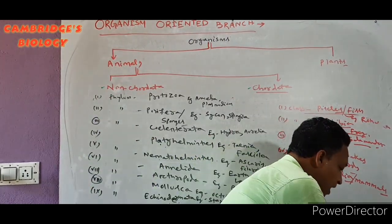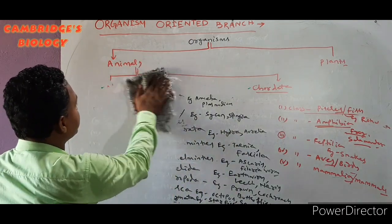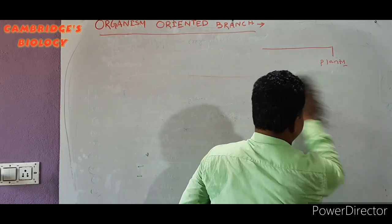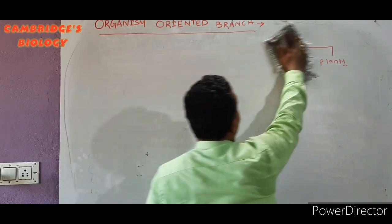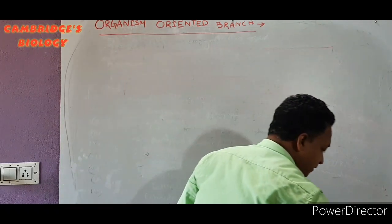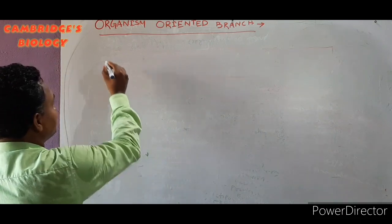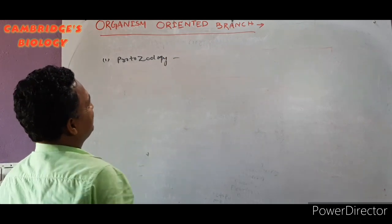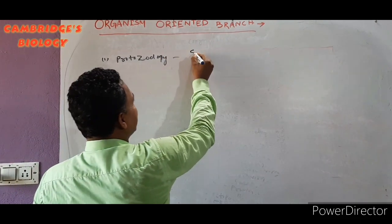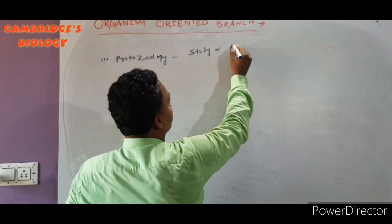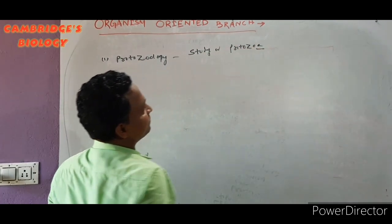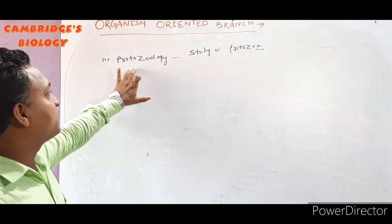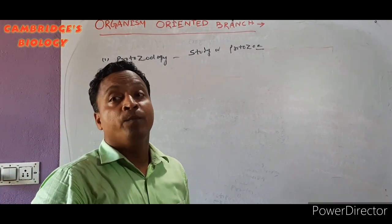Now for organism-oriented branches: if we study about a group of animals, we call that an organism-oriented branch. The first one is Protozoology — the study of Protozoa.